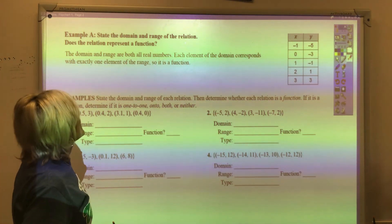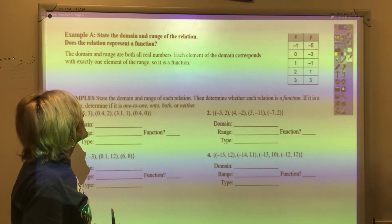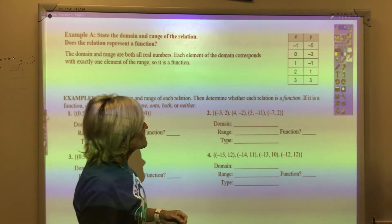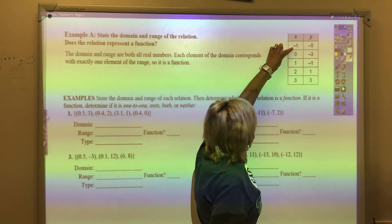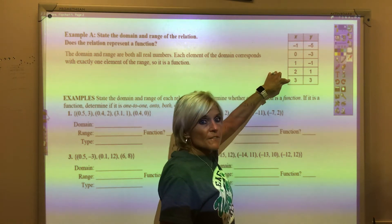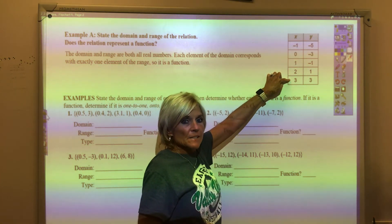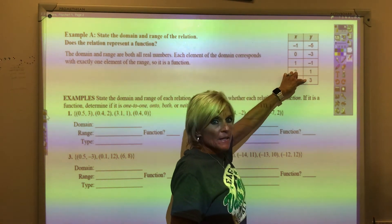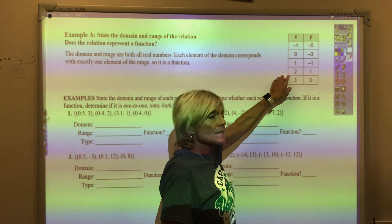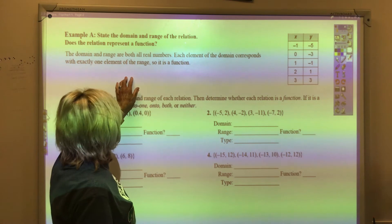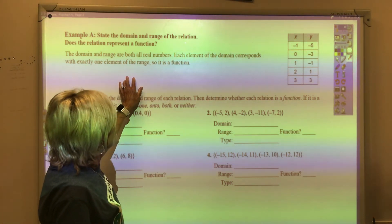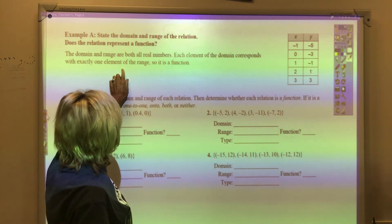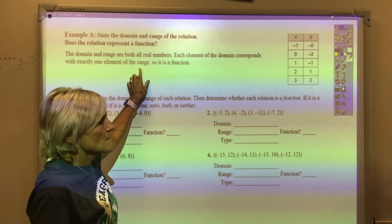So another example, state the domain and the range of the relation. Does the relation represent a function? If the x's don't repeat themselves, this is a function. x cannot be repeated. y can be repeated, although it isn't here, but it can be repeated. x cannot. This says that the domain and range are both all real numbers. Each element of the domain, or the x, corresponds with exactly one element of the range. So it is a function.